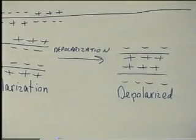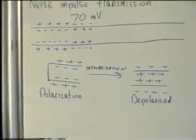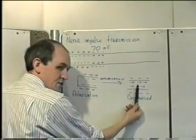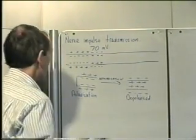So it's changed from being polarized to being depolarized. This process is called depolarization. This is when the cell is at rest. This is when a nerve impulse is actually being transmitted in the nerve fiber.